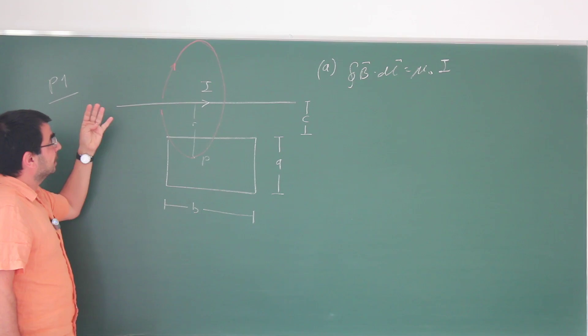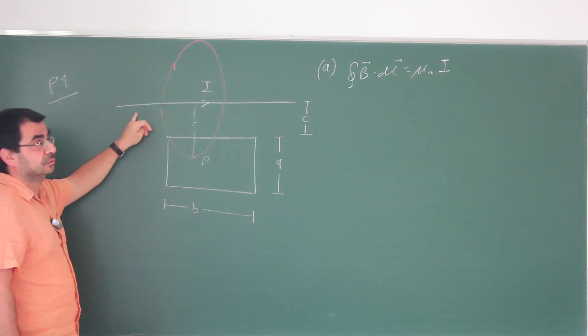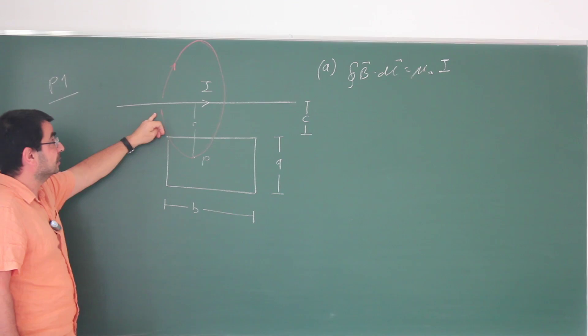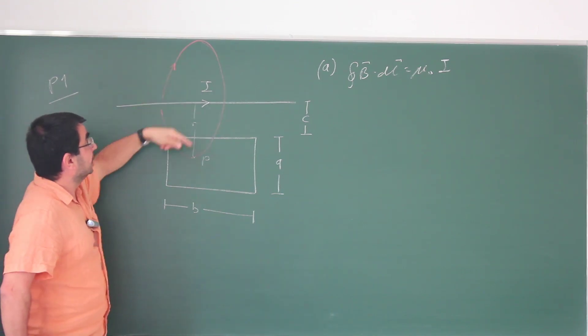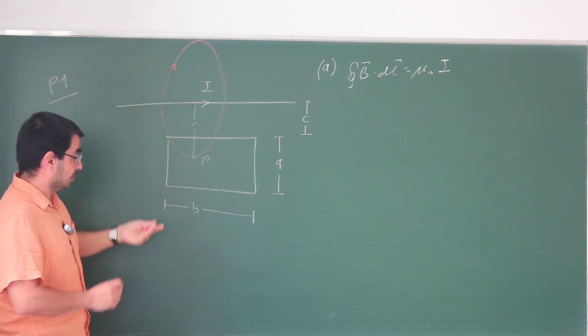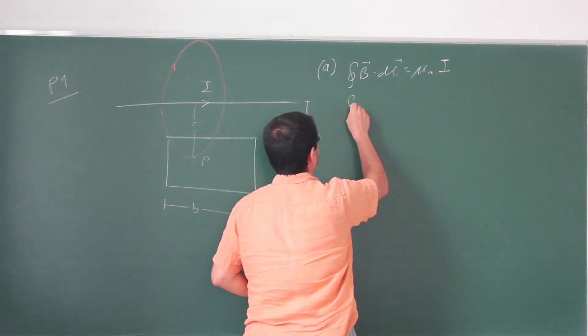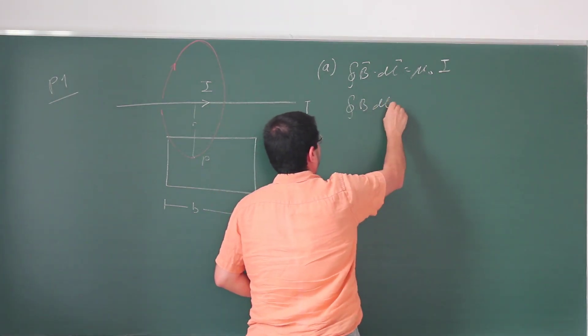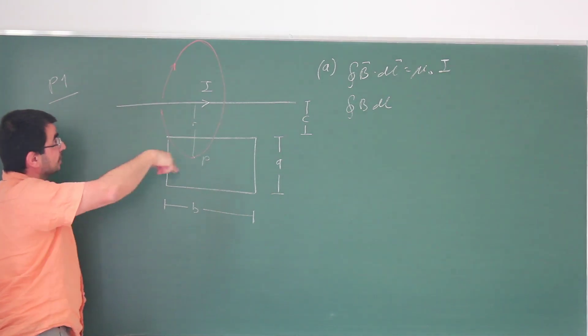Now, the magnetic fields due to current carrying wires are in terms of loops because this system has cylindrical symmetry. That loop has to be a circle, so our magnetic field is going to be along this circle. That dot product becomes a simple product and I'm choosing a positive sign here implicitly assuming the magnetic field is in the direction of the loop that I'm choosing.